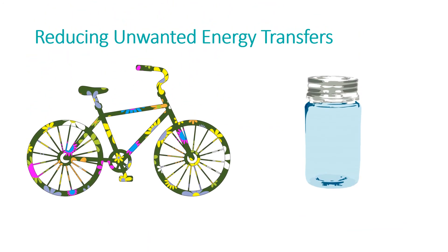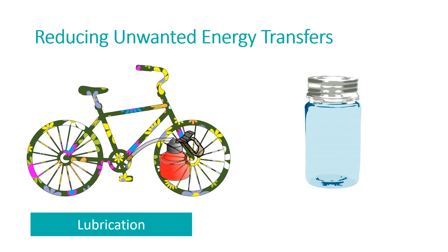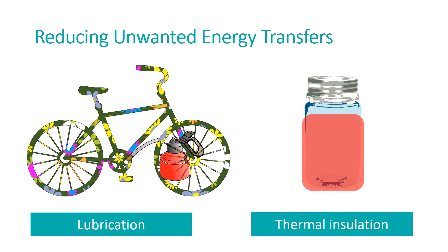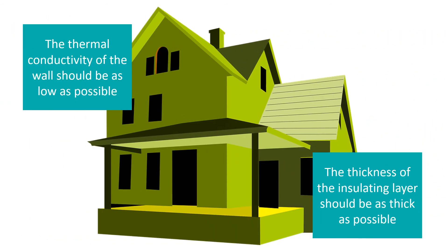To reduce unwanted energy transfers, you could lubricate moving parts, or you could use thermal insulation to reduce heat loss. To reduce the cooling of a building, the thermal conductivity — which is a measure of the rate of energy transfer by conduction across the material — should be as low as possible, and the insulating layer in the walls should be as thick as possible.